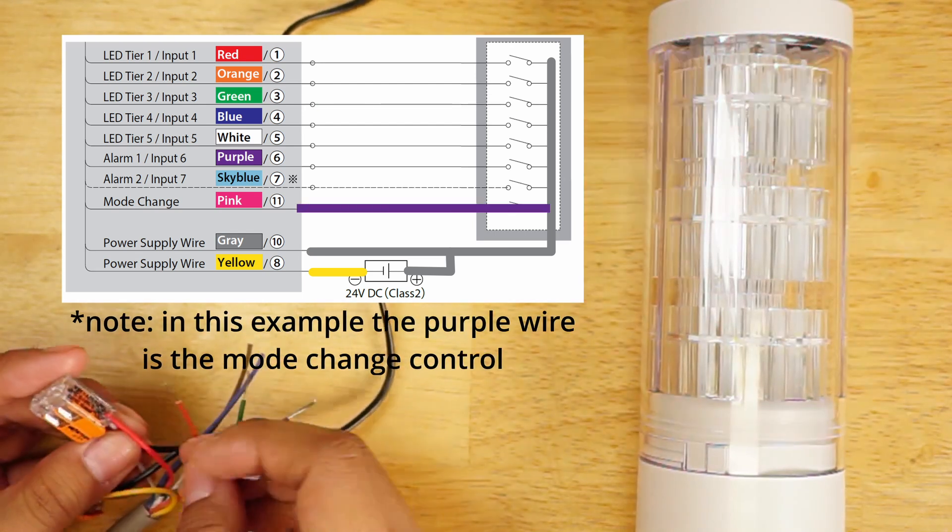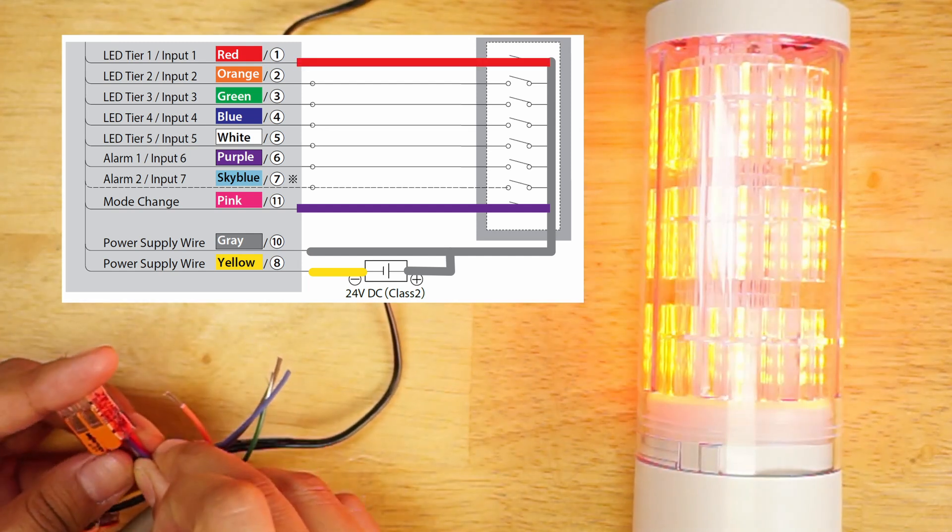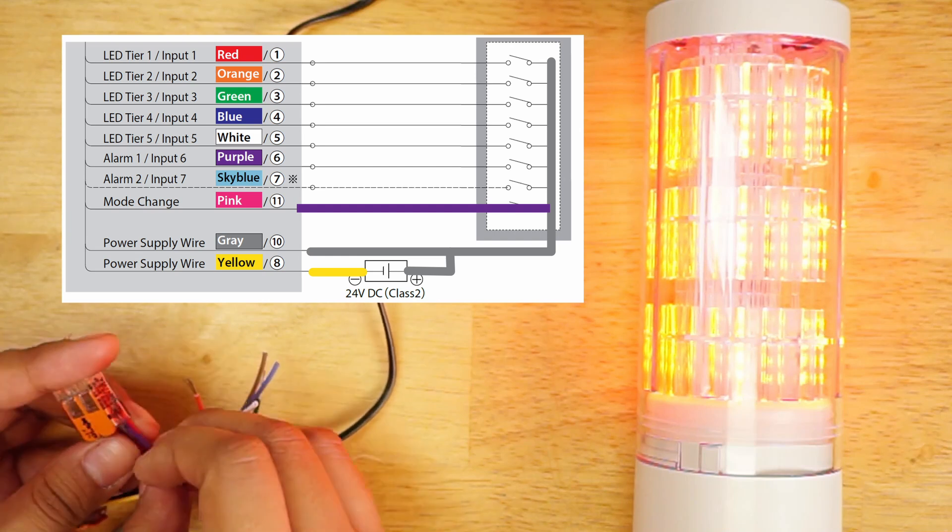For smart modes, we connect the purple wire to gray. Then with the red wire, smart mode 1 activates. In this case, all red tiers.